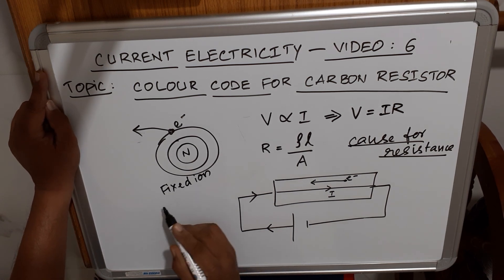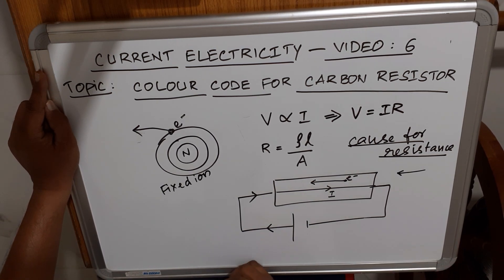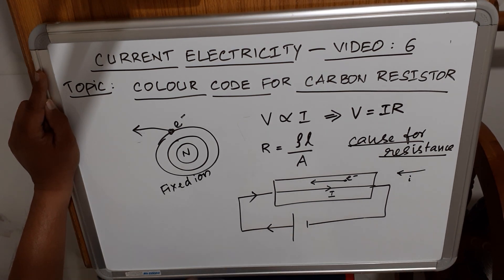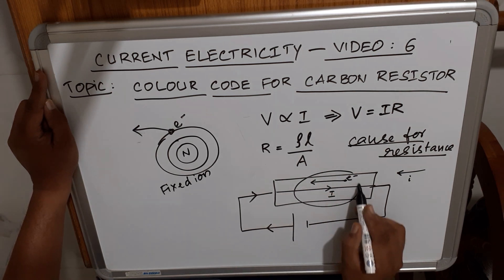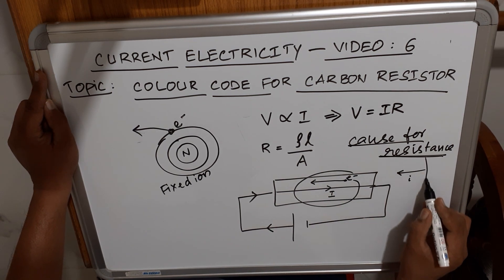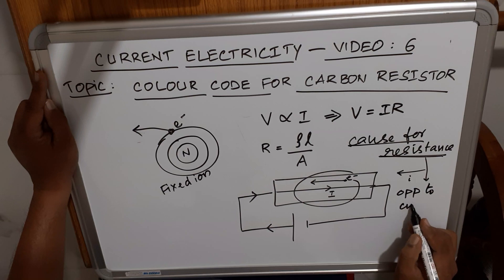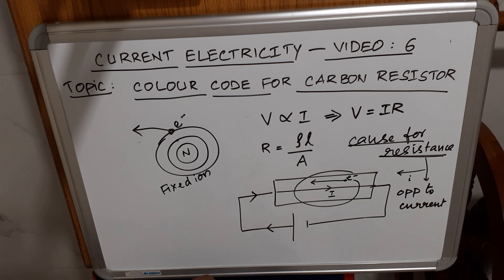The impact of these collisions reduces the motion of electrons, so current is reduced — the electrons cannot move freely. This particular property is known as resistance: opposition to current. The conductor has a property by virtue of which it opposes the flow of charge through it — that is called resistance.